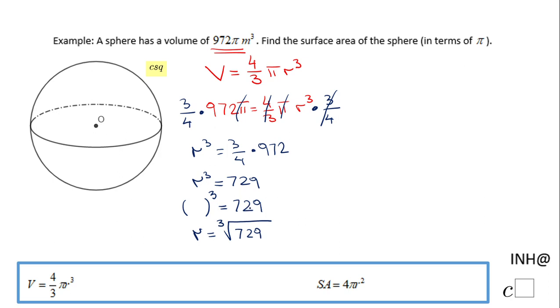And that is 9, so the radius of this sphere is 9. Other than that, if you don't have a calculator like this, use a guess and check and you will see 9 to the third power will be 729.